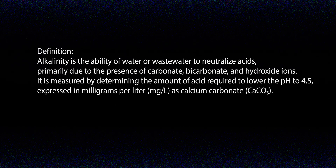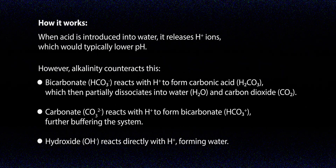Alkalinity is determined by performing a titration in a lab — essentially measuring how much acid is required to lower the pH to 4.5, the point at which all buffering capacity is used up. The result is expressed in milligrams per liter as calcium carbonate. When an acid is introduced into water, it releases hydrogen ions, which would normally cause the pH to drop. However, alkalinity acts as a buffer, preventing sudden changes. Bicarbonate reacts with hydrogen ions to form carbonic acid, which then partially breaks down into water and carbon dioxide, helping absorb the acid's impact.